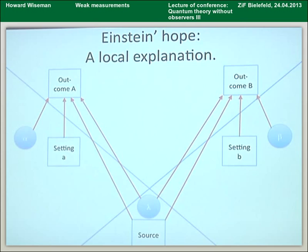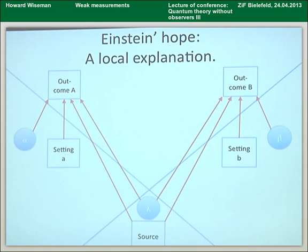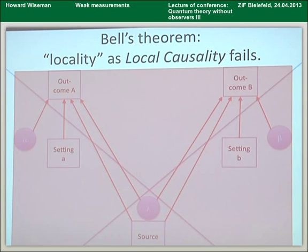Of course what Einstein hoped was that there would be a local explanation for these phenomena, and essentially what that means is that we may have to introduce extra variables — lambda down here, alpha there and beta there. What these red arrows mean is that if you know everything that points towards an outcome, then you'll be able to say what that outcome is. So if you know the values of these hidden variables, what the source was, what the setting was, then you'll know what the outcome A was, and similarly with outcome B. This is a local explanation because all of these arrows are time-like. Bell's theorem is that this fails for quantum correlations — this notion of local causality fails. We can't have an explanation like that.